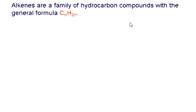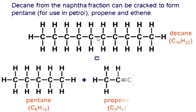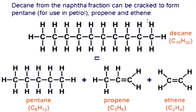Alkenes are a family of hydrocarbon compounds. This is naphtha — decane, C10H22, with 10 carbons — a very big hydrocarbon obtained from the naphtha fraction. On page 277, just below gasoline, you will see naphtha. Decane comes from naphtha and we can crack it.